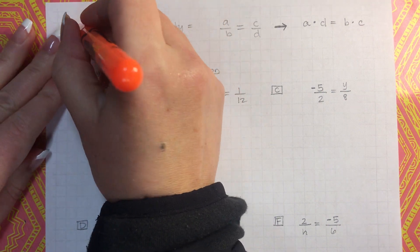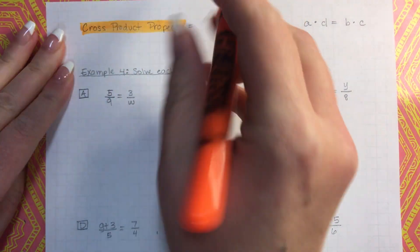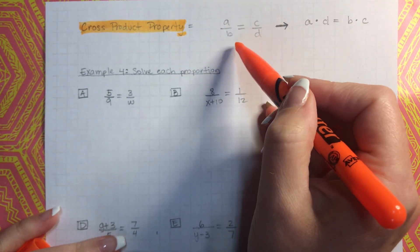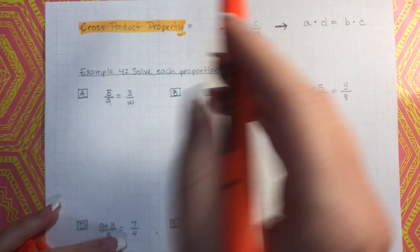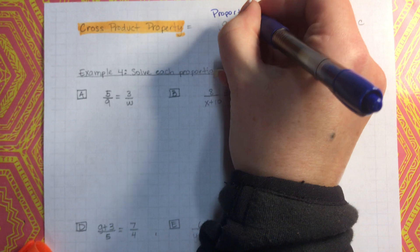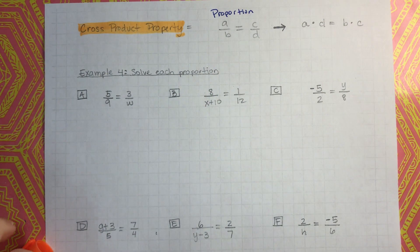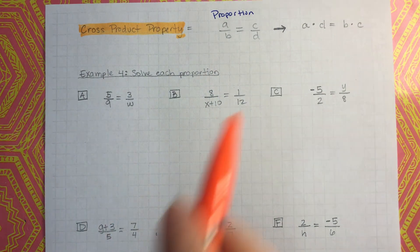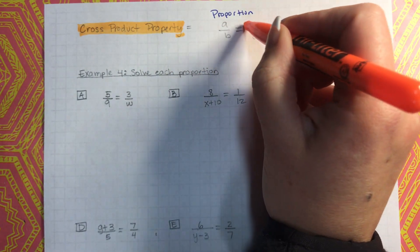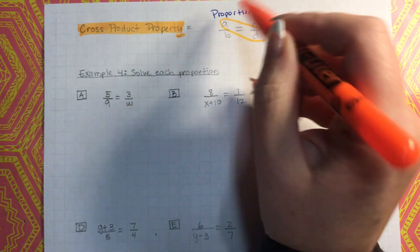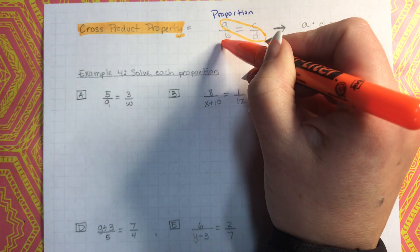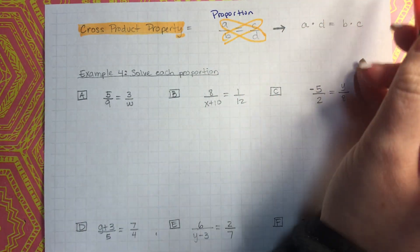What the cross-products property says is that whenever you have two fractions set equal to each other — does anybody remember what this is called? These are two fractions set equal to each other, so this is called a proportion, or two ratios set equal to each other. So whenever you have a proportion, you can multiply the things that are across from each other, diagonally. AD is actually equal to BC. That's the cross-products property.